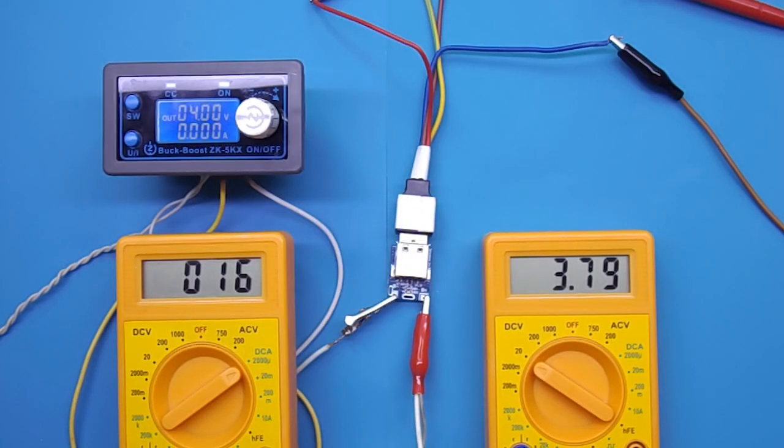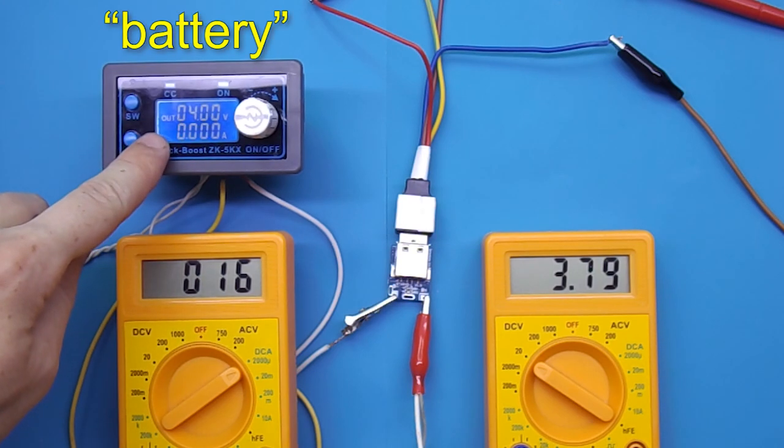Now let's look at the characteristics of the converter. In this circuit, instead of a battery, I connected the power supply. I will supply 4 volts from it.